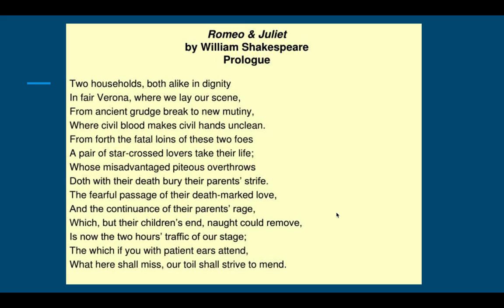You'll be hearing this a lot. You've already read it for yourself and you're going to hear it again as we get into the play, but let's just listen to it one more time. 'Two households, both alike in dignity, in fair Verona where we lay our scene, from ancient grudge break to new mutiny, where civil blood makes civil hands unclean. From forth the fatal loins of these two foes, a pair of star-crossed lovers take their life, whose misadvantaged piteous overthrows doth with their death bury their parents' strife. The fearful passage of their death-marked love and the continuance of their parents' rage, which but their children's end naught could remove, is now the two hours' traffic of our stage, the which, if you with patient ears attend, what here shall miss our toil shall strive to mend.'